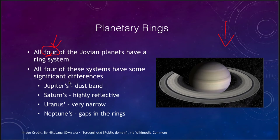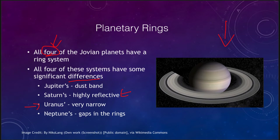However, there are differences between each of these. Saturn's is highly reflective and prominent, very easy to see, and Saturn's were the first rings to be detected. The next set to be detected were those of Uranus. Uranus has very narrow and very dark rings, and they were detected when a star was occulted by the rings — the rings blocked out the light of that star and caused it to dim.